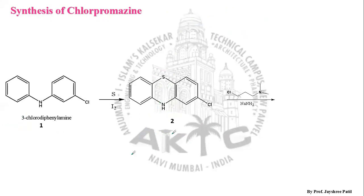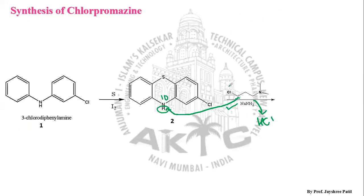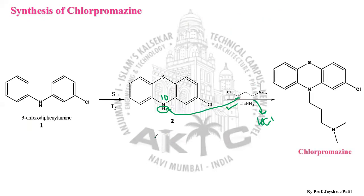Now that structure 2, our main pharmacophore, has been synthesized, our aim is to add the side chain at the 10th position, which is towards the nitrogen. This addition takes place in the presence of a base — sodamide acts as the base, which accepts the proton. The side chain then attacks the nitrogen, resulting in removal of the HCl moiety.